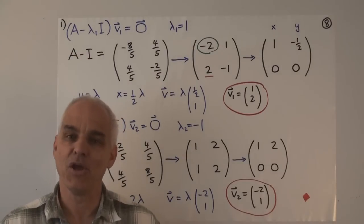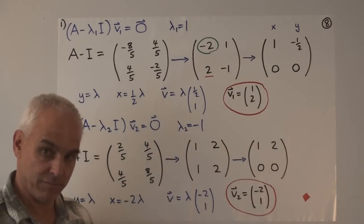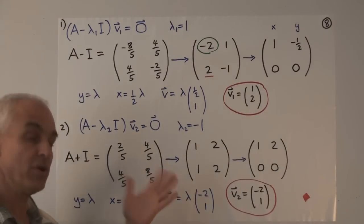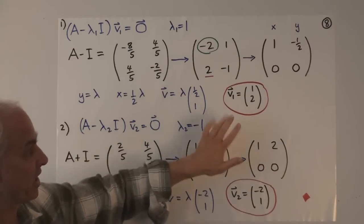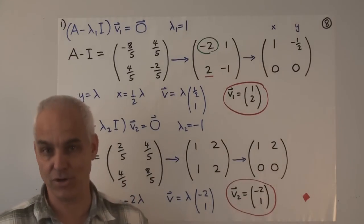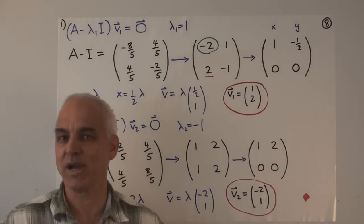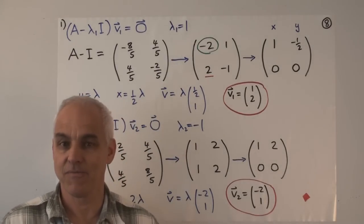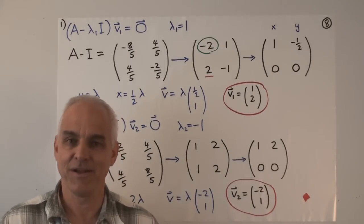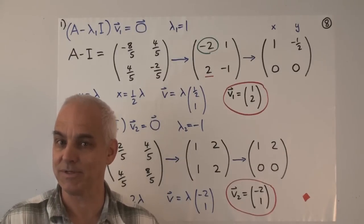So purely algebraically, we can deduce that this transformation fixes vector (1, 2) and reflects in the opposite direction (−2, 1). Geometrically, it is in fact a reflection in this line. The two eigenvectors are perpendicular. That illustrates, in the 2×2 case, this very powerful method for finding eigenvectors. Later on, we're going to look at the 3×3 case and higher, where it's very much the same kind of story — it's just that finding the eigenvalues becomes more complicated.